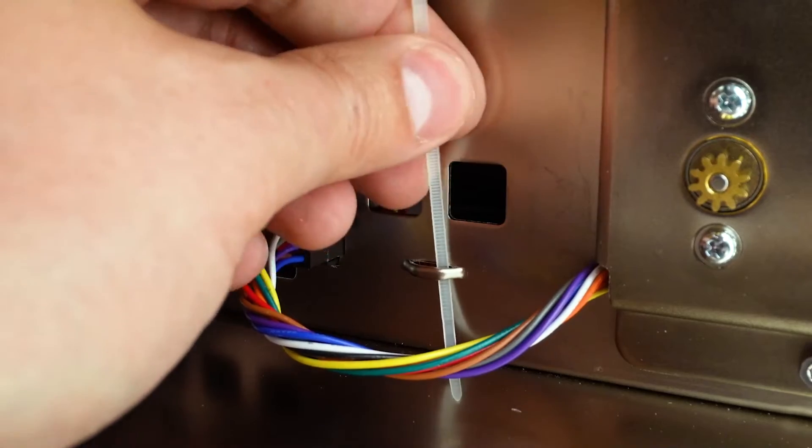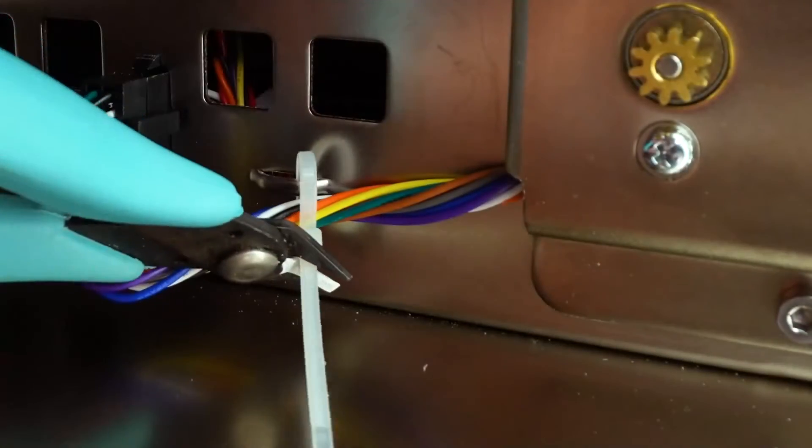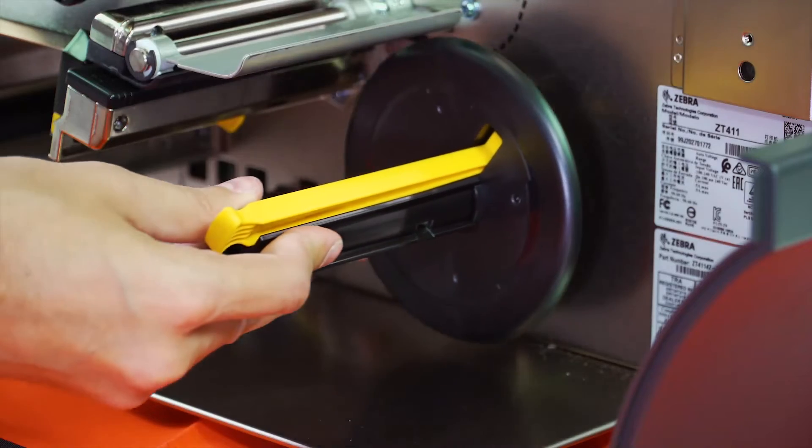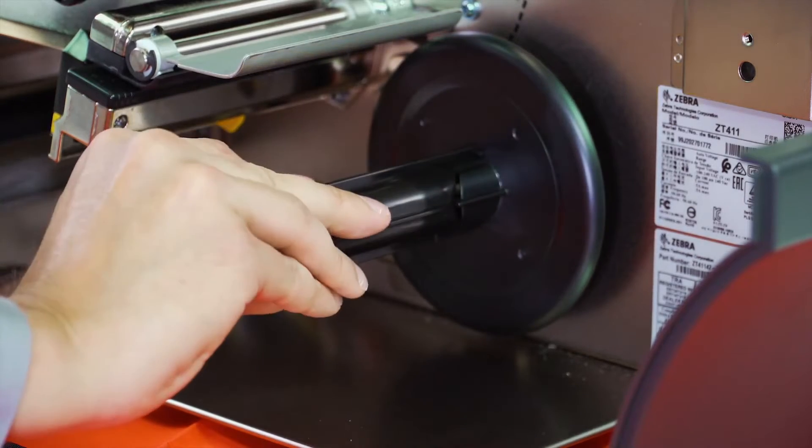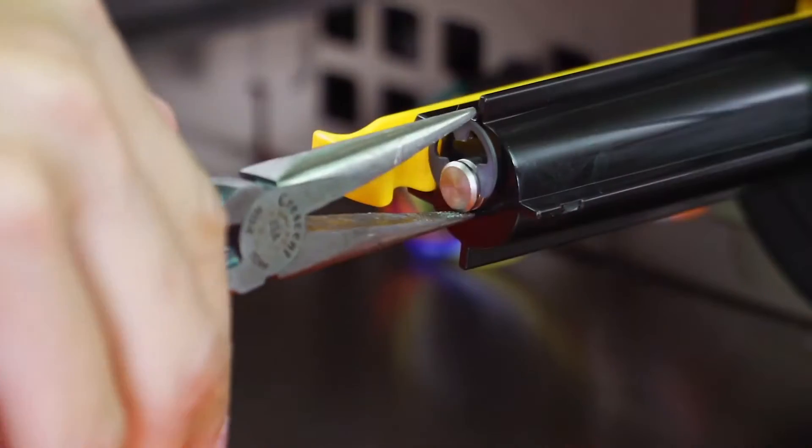Install the cable tie through the printer tie point and around the cable. Slide the liner take-up spindle onto the shaft of the liner take-up motor. Install the E-ring.